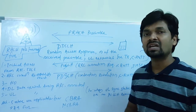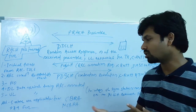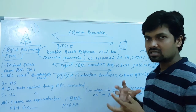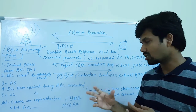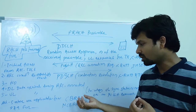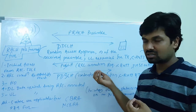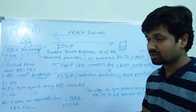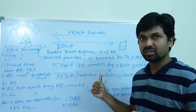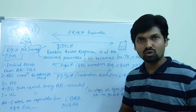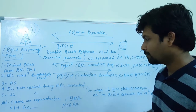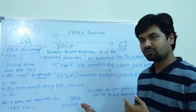Contention-based random access is performed for all five reasons. Out of the 64 reserved preambles, some are reserved for contention-based random access and some are reserved for handover and downlink data arrival. Non-contention-based preambles are part of the 64 preambles but do not fall in the contention-based bucket — they are contention-free. In non-contention-based random access, the E-NodeB directly allocates a preamble to the UE.